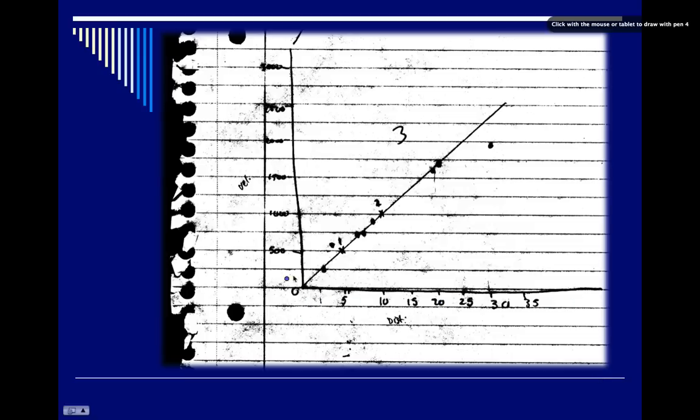Look how messy this is by free handing that line. So, use a ruler even if you have graph paper and it's going to make the whole thing look nicer. The other thing I noticed was on the x-axis down here, look at how the spaces are not equivalent by free handing this graph. If you're using a ruler, it's going to make your increments be at an equal distance from each other, which is going to make the graph more accurate as well.